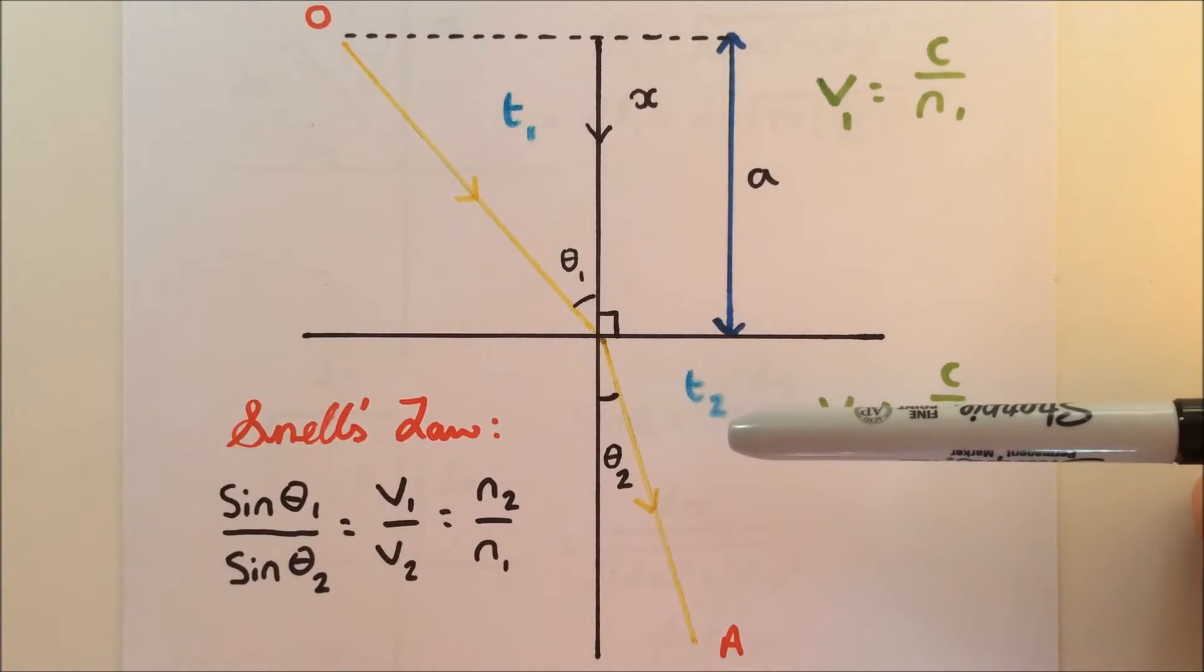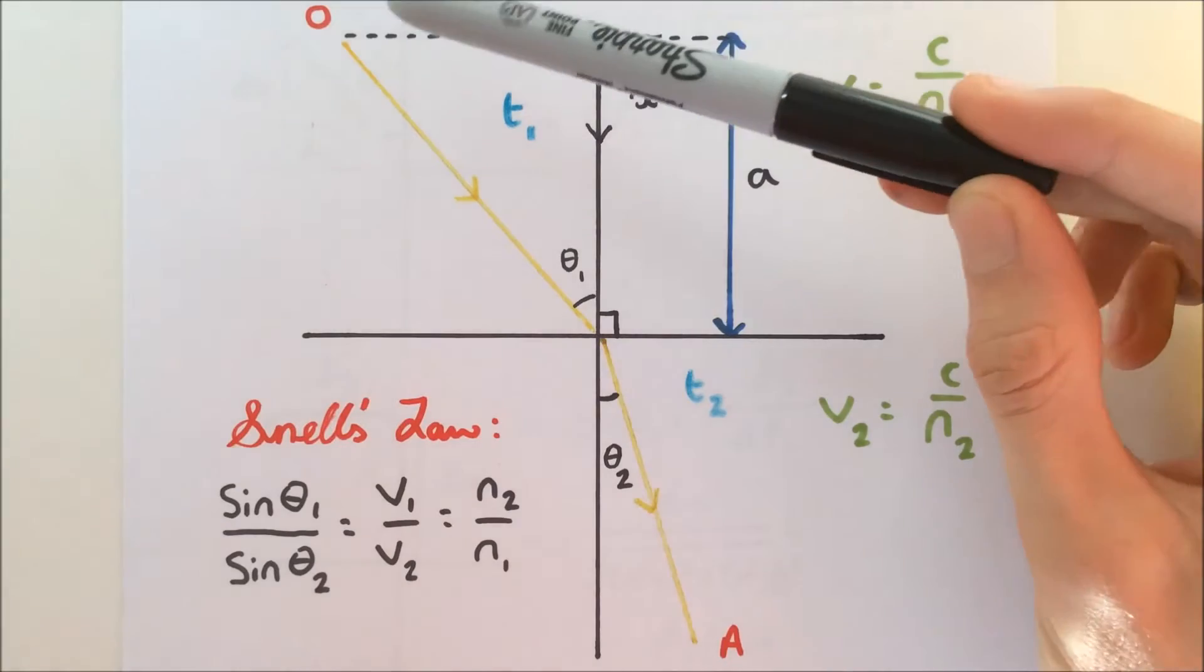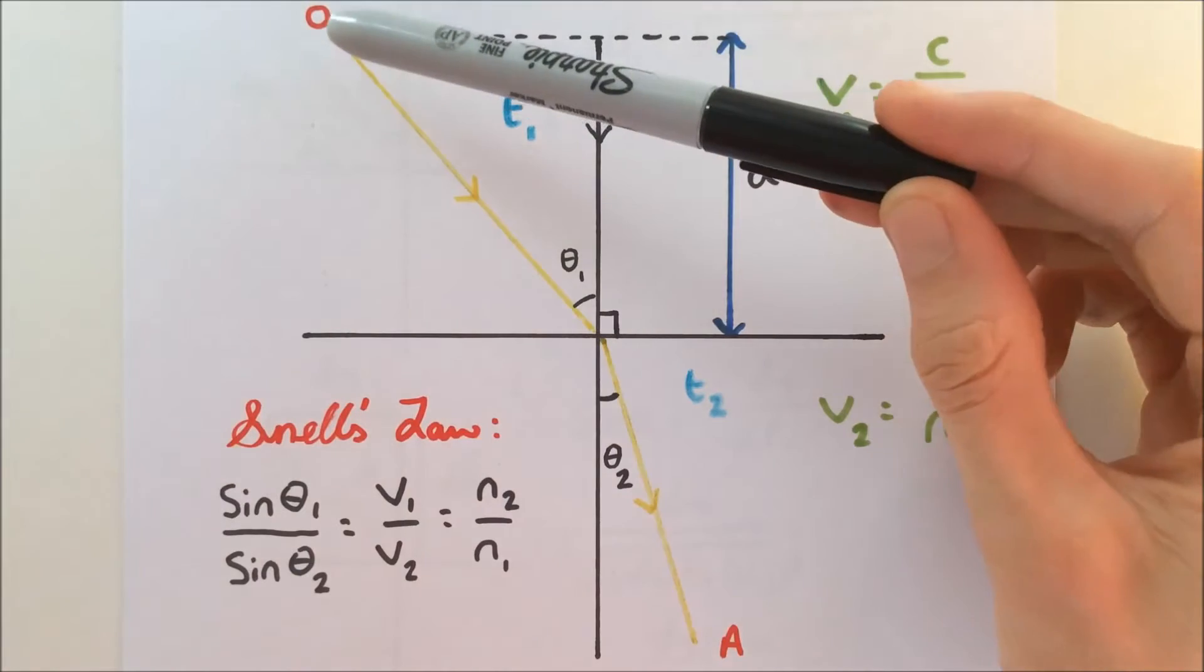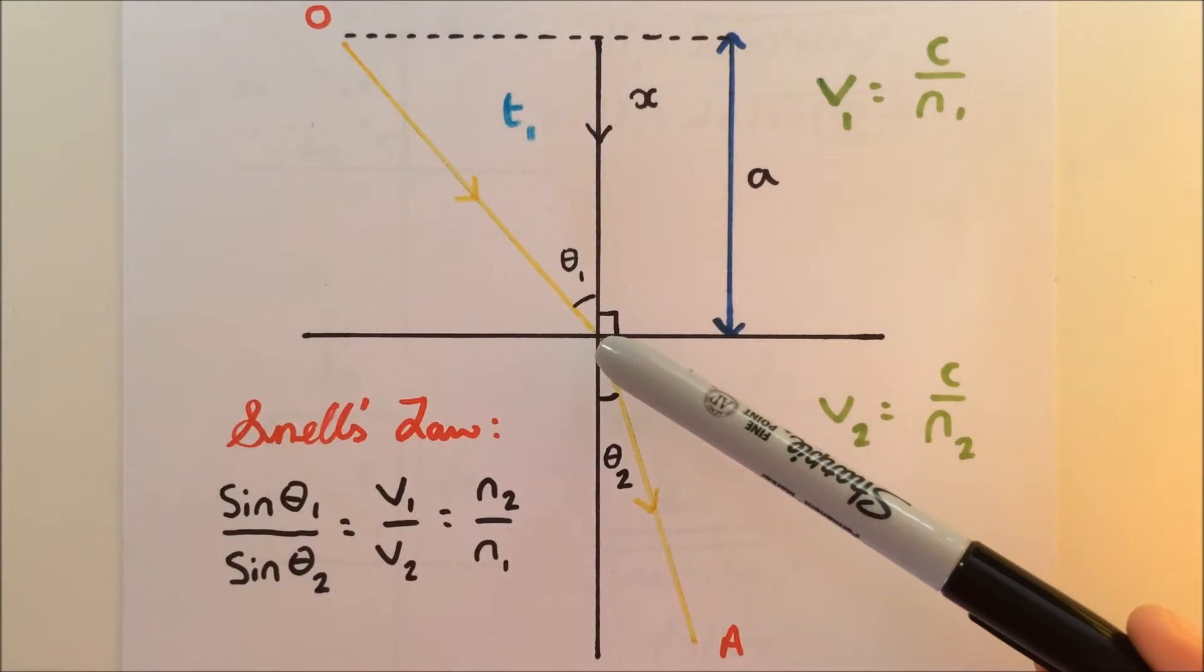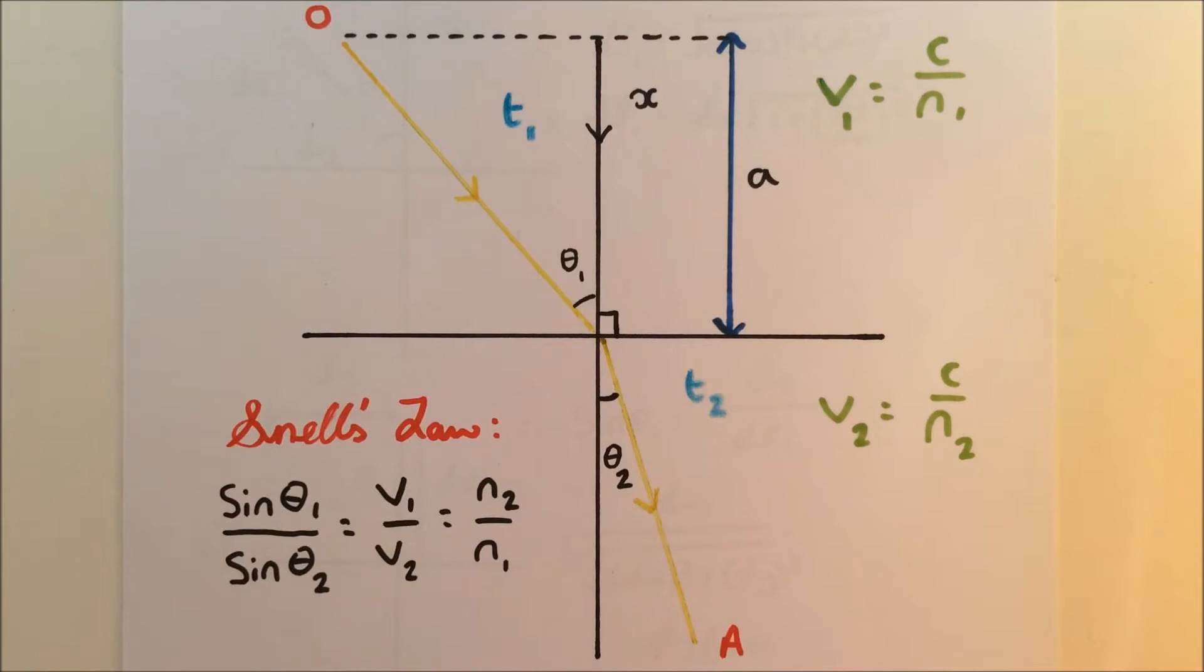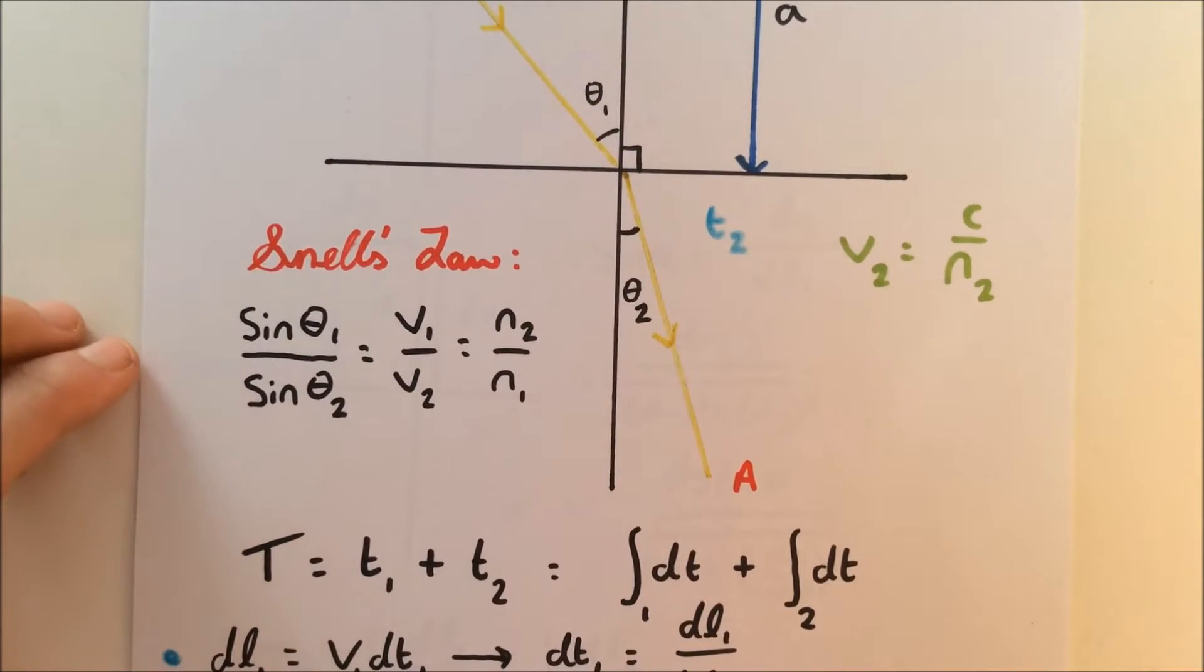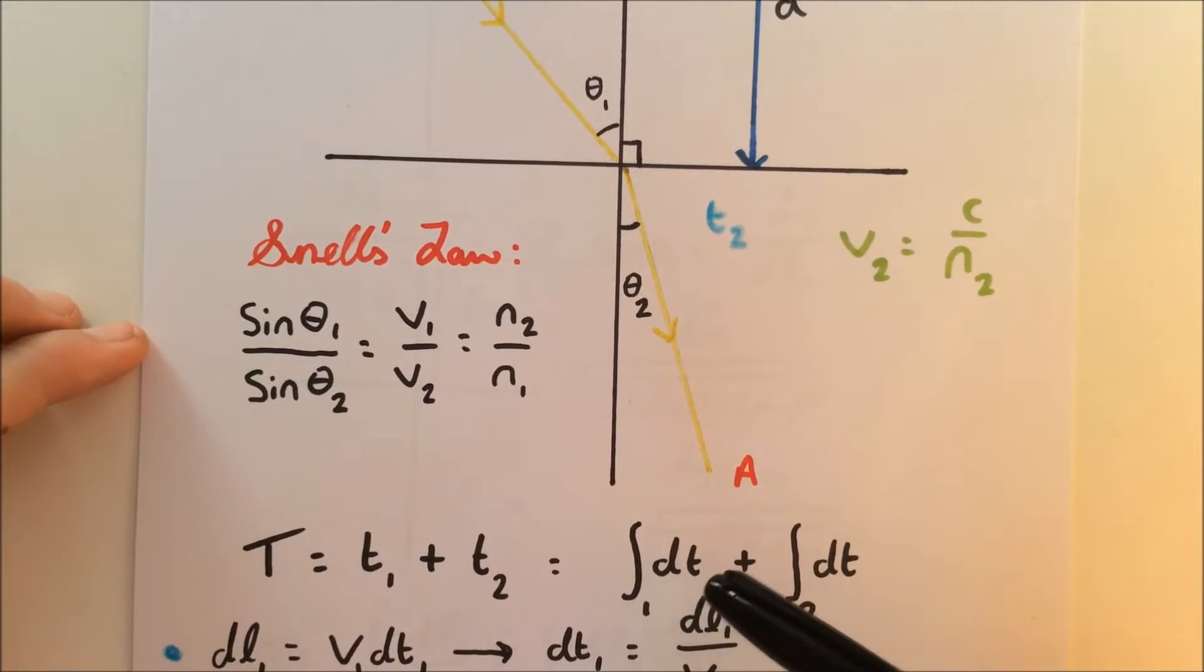And T1 and T2 are time. So T1 is the time taken for the incident ray to go from O to the boundary, and T2 is the time taken from light to get from the boundary to the end point, capital A. So the total time, we can therefore write capital T. The total time is T1 plus T2, the time taken to get from O to A, and we can write it in terms of integrals: just integrate an infinitesimal dt.